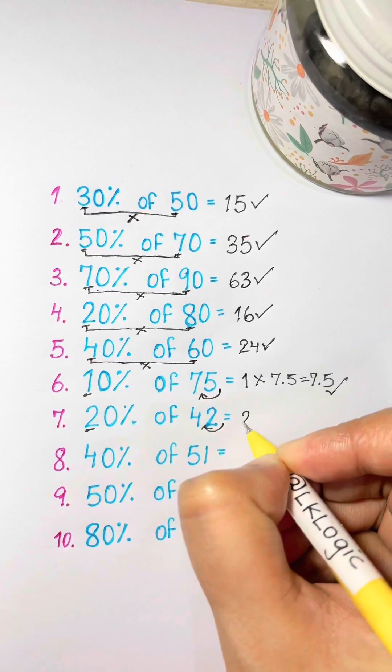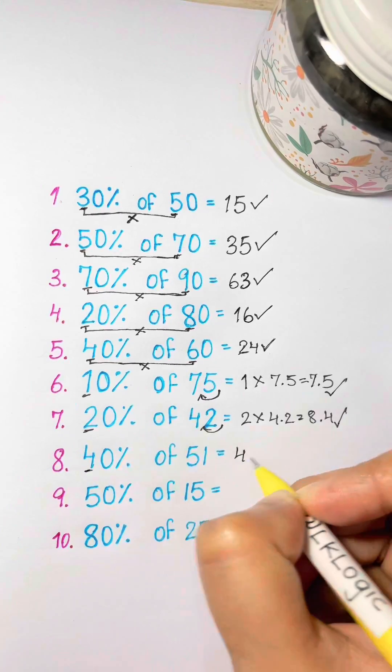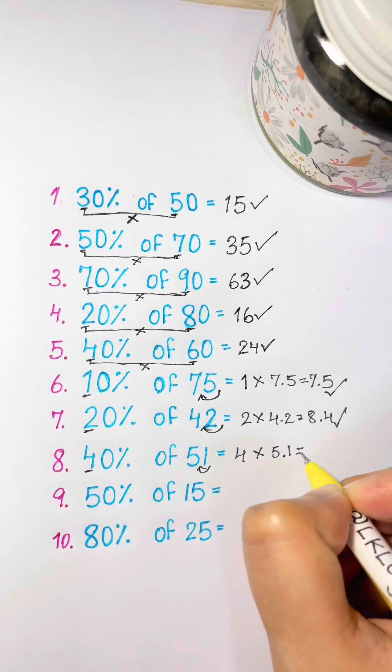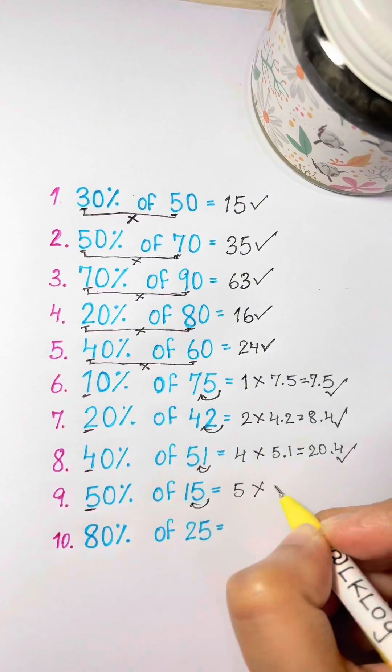Now 2 times 4.2 equals 8.4. 4 times 5.1 equals 20.4. 5 times 1.5 equals 7.5.